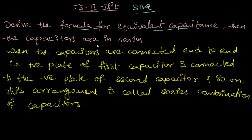When the capacitors are connected in series, we have to find out the equivalent capacitance — that is, the total capacitance when the capacitors are connected in series. When the capacitors are connected end to end, for example, I am considering three capacitors.